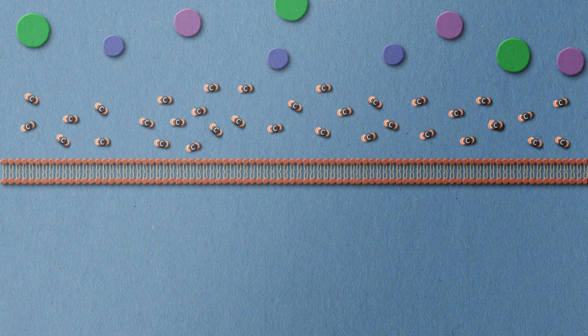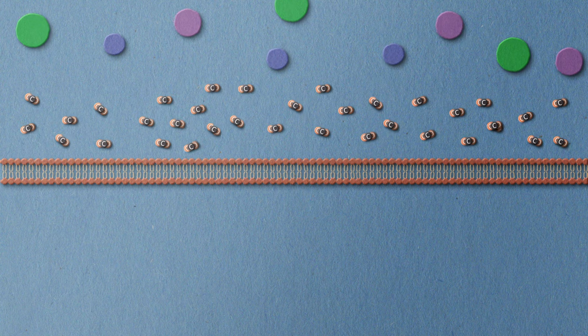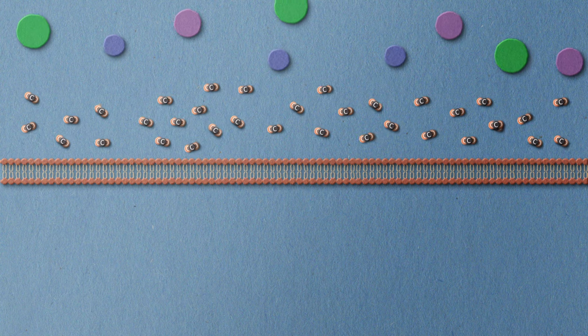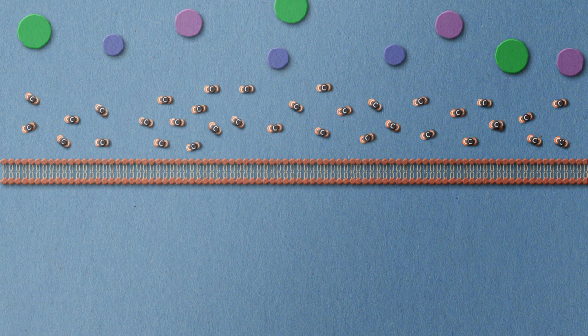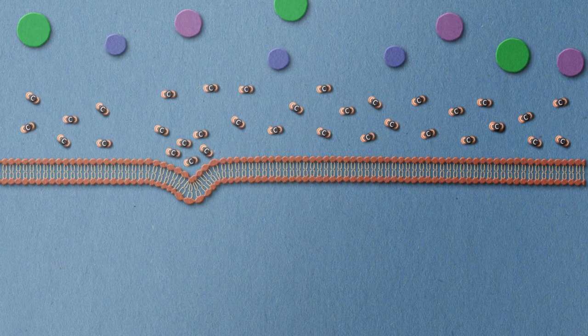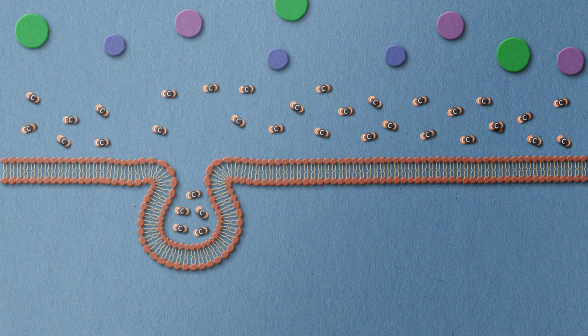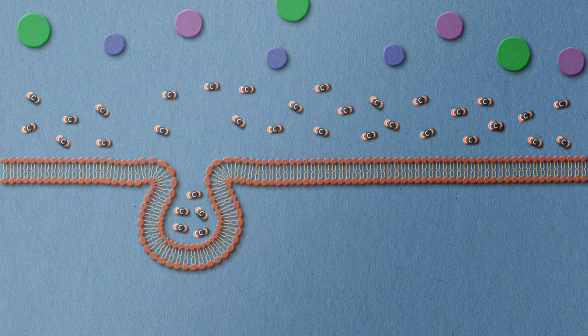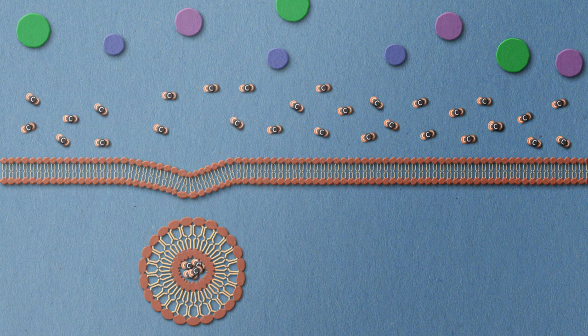Pinocytosis is a type of transport where small particles suspended in the fluid outside the cell are brought into the cell through an inward folding of the cell membrane, resulting in a suspension of the particles within a small vesicle inside the cell, like if the cell is drinking.